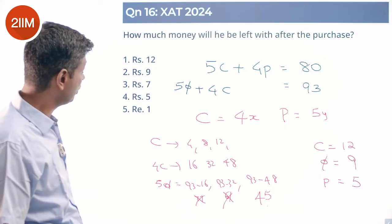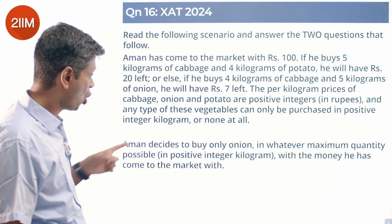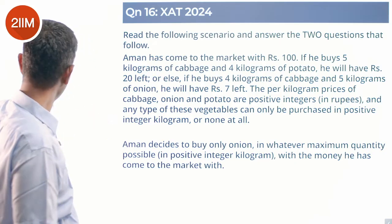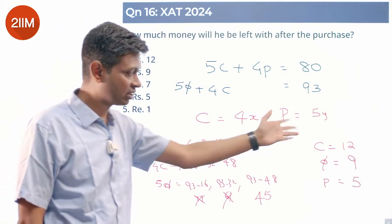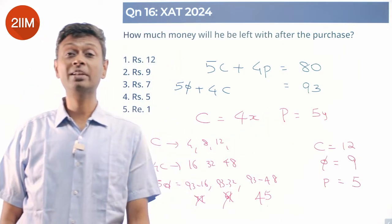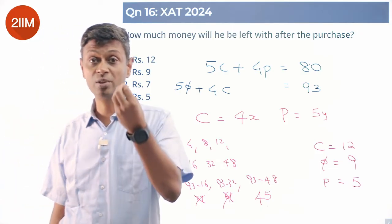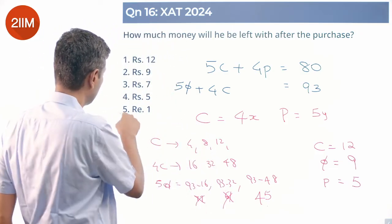So how much money will he be left with after the purchase? What is he purchasing? He's purchasing only onions, maximum quantity possible. Price of onion is 9. Maximum he can buy is 11 kilograms. 99 bucks he'll spend. 1 rupee he'll be left with. That's the answer.